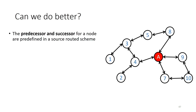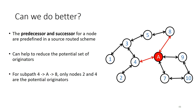In a source routing scheme, the predecessor and successor of a node reveals a lot of information because the path is fixed. If adversary A receives a transaction from node 4 and it goes to node 8, the potential originators can only be among nodes 2 and 4, because all others have a better path to reach node 8 that does not pass through A.